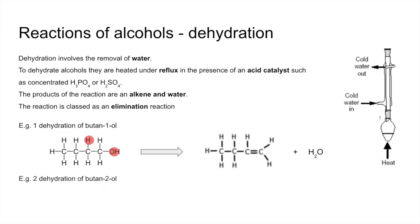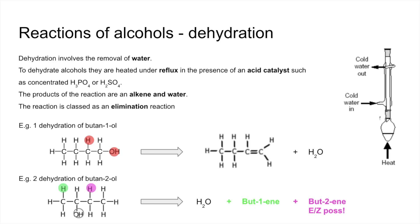Changing the alcohol to butan-2-ol: take the OH, and if we take the end H we get but-1-ene. But there's another adjacent carbon, so we can also get but-2-ene, meaning there's more than one possible product. When you get but-2-ene, it's also possible to get EZ isomers. The top tip is: whenever you make an alkene, always ask yourself whether it can show EZ isomerism. But-1-ene cannot, because of identical atoms on one carbon of the double bond.